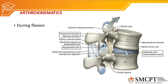Now coming to arthrokinematics. During flexion, L1 is the superior vertebra and L2 is the inferior vertebra. The inferior articulating facet of the superior vertebra will slide superiorly and slightly anteriorly on the superior articulating facet of the inferior vertebra. This sliding of the facets is the main source of movement that occurs in the vertebral column.